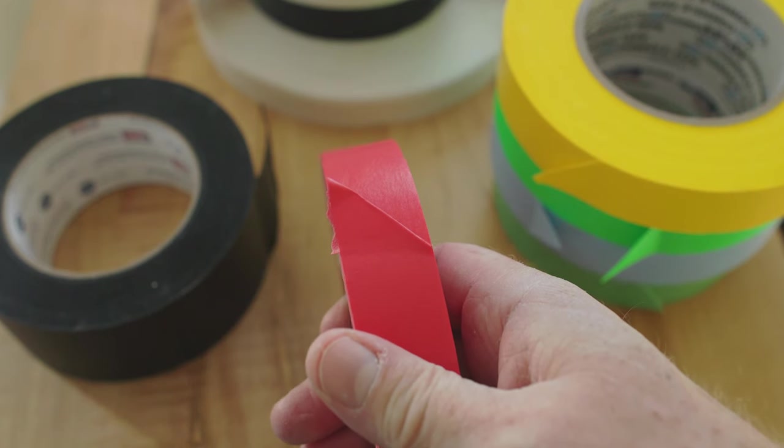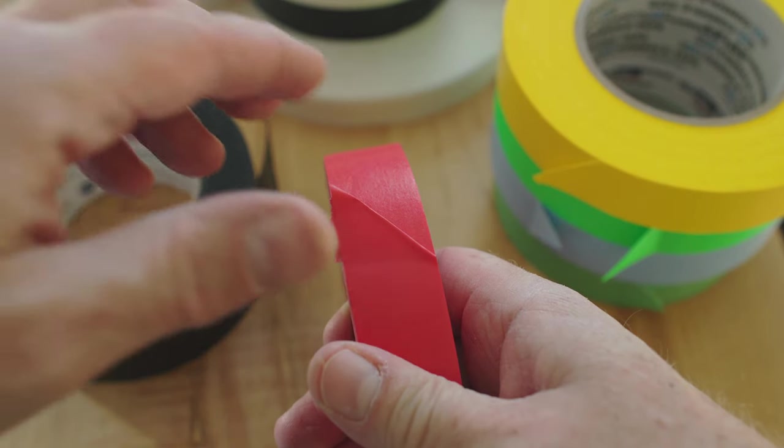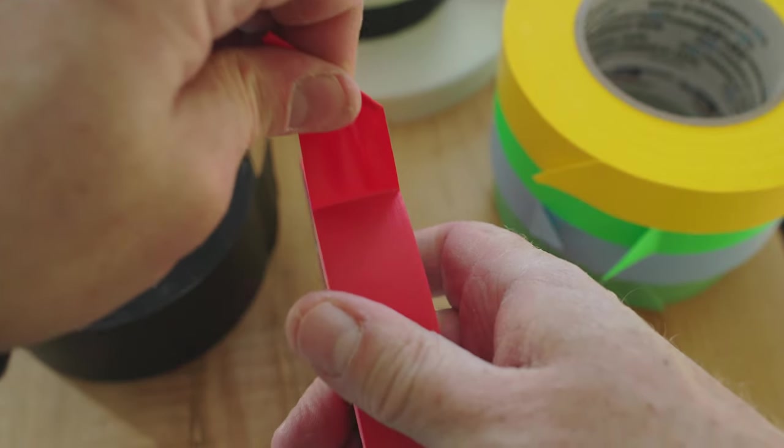Basically what you do, I'm right-handed, so I hold the roll in my right hand. I grab the end of the roll, which already has a tab on it because I put it there the last time I pulled a piece off. I pull the piece of tape out.